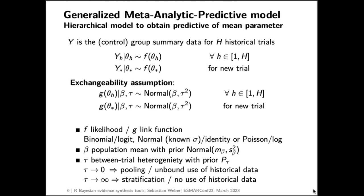The most important prior in this model is the prior placed on the between-trial heterogeneity parameter tau, because in most cases we may only have two or three studies to run this analysis — making this prior relatively important. The parameter tau is very important: whenever tau approaches zero, the model pools the available information and we get full use of the historical data; whenever tau approaches very large values, the model stratifies the data and there is no use of the historical data for any future study.